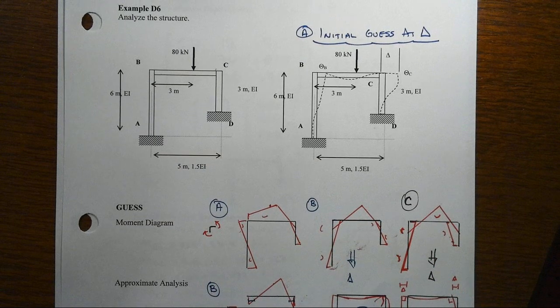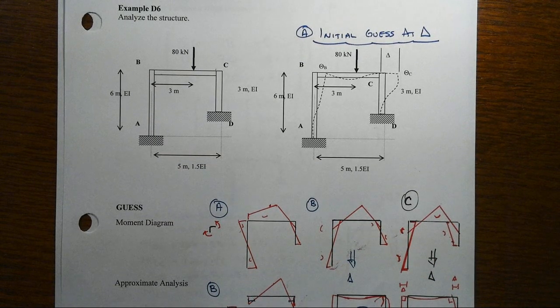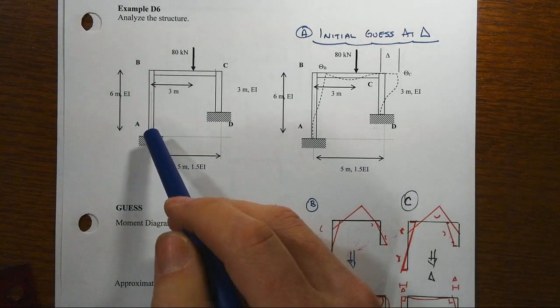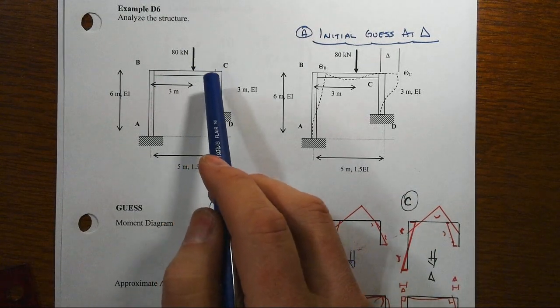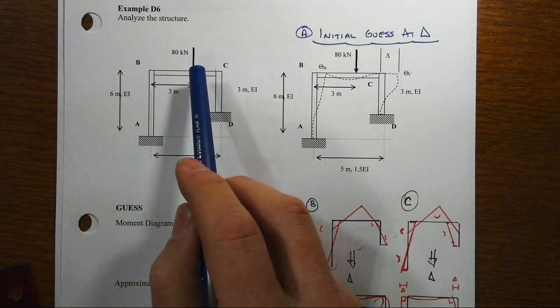As we wrap up this example and try to figure out what lessons we've learned, let's go all the way back to our initial guess for this asymmetric frame with columns of different lengths, although the same bending rigidity.